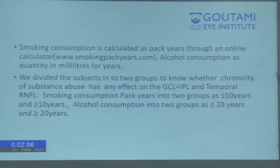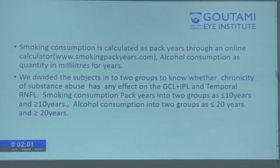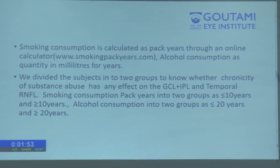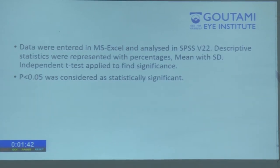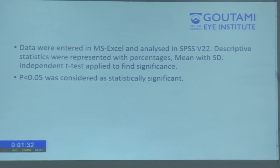Smoking consumption was calculated as pack years through an online calculator (smokingpackyears.com) and alcohol consumption as quantity in milliliters per year. Subjects were divided into two groups to assess whether chronicity of substance abuse affects GCL+IPL and temporal RNFL: smoking consumption was divided into less than 10 pack years and more than 10 pack years, and alcohol consumption into less than 20 years and more than 20 years. All data was entered in MS Excel and analyzed through SPSS version 22. Descriptive statistics were represented with percentages, mean, and standard deviation. An independent t-test was applied to find significance, with a p-value less than 0.05 considered statistically significant.